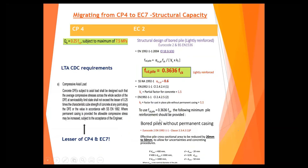Coming back to structural capacity for bored piles: the old rule was simply 0.25 fcu, not more than 7.5 MPa. But now with EC7, it's slightly more complicated. From a BCA seminar summary: you use 0.3636 fck for lightly reinforced piles — meaning not a full cage. You also have to reduce the cross-sectional area of the pile accordingly, depending on the diameter. And if you notice, EC2 actually lets you use a higher structural capacity, more than 7.5 MPa.